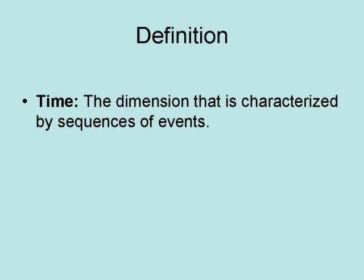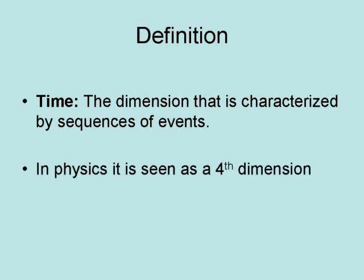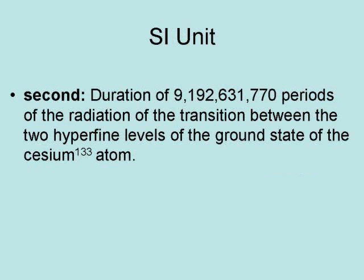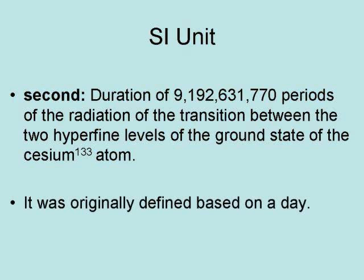Time is the dimension that is characterized by sequences of events. In physics it is seen as a fourth dimension. The SI unit of time is the second. A second is the duration of 9,192,631,770 periods of the radiation of the transition between the two hyperfine levels of the ground state of a Caesium-133 atom. This is quite a mouthful, but it is the current scientific definition of a second.